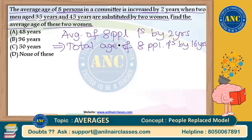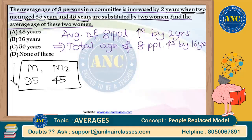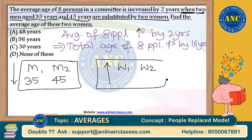Now, when is this average of 8 people increasing by 2 years? This increase is happening only when 2 men aged 35 and 45 years are substituted by 2 women. That means men 1 and men 2, aged 35 and 45 years, are going out of the class, and these 2 people are replaced with women 1 and women 2. Because 2 men are going out and 2 women are coming inside, the total sum is increasing by 16 years.